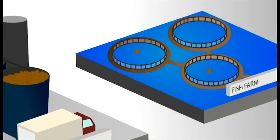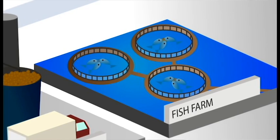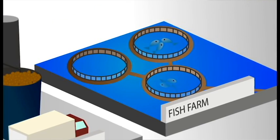The finished feed is then purchased by fish farmers, who use it to grow species such as salmon, pangasius and shrimps as well as many others.